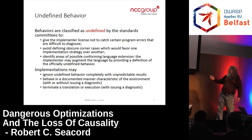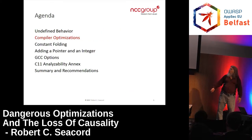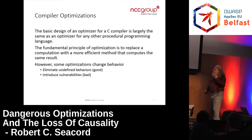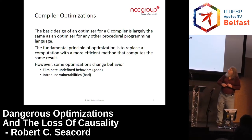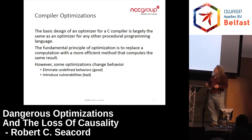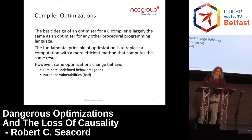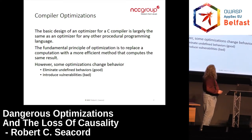The compiler is allowed to behave in a documented manner characteristic of the environment — for example, int_min remainder minus one on Intel characteristically faults. Or it could terminate translation or execution with a diagnostic, which is the most you could hope for. The basic design of an optimizing compiler for C is to replace computations with more efficient methods that produce the same result. Some optimizations eliminate undefined behaviors — we'll call those the good optimizations — and then we have ones that introduce vulnerabilities — we'll call those the bad optimizations.